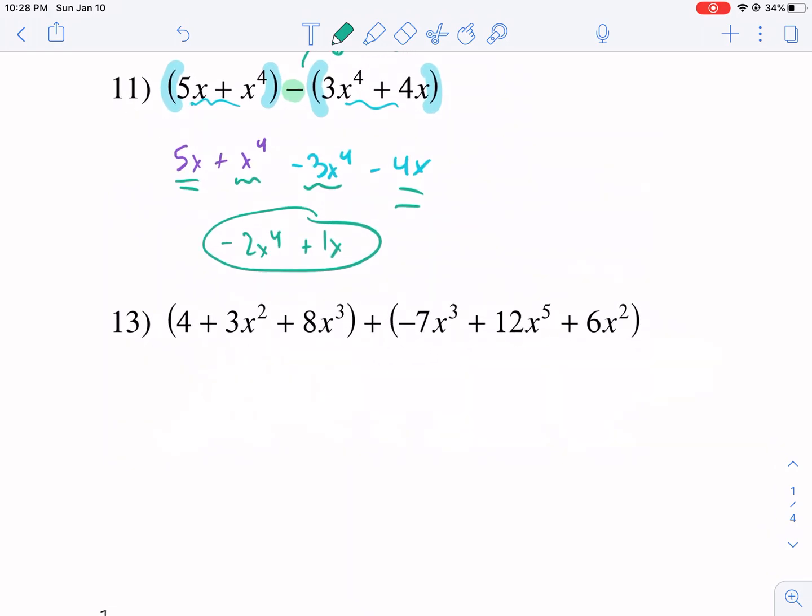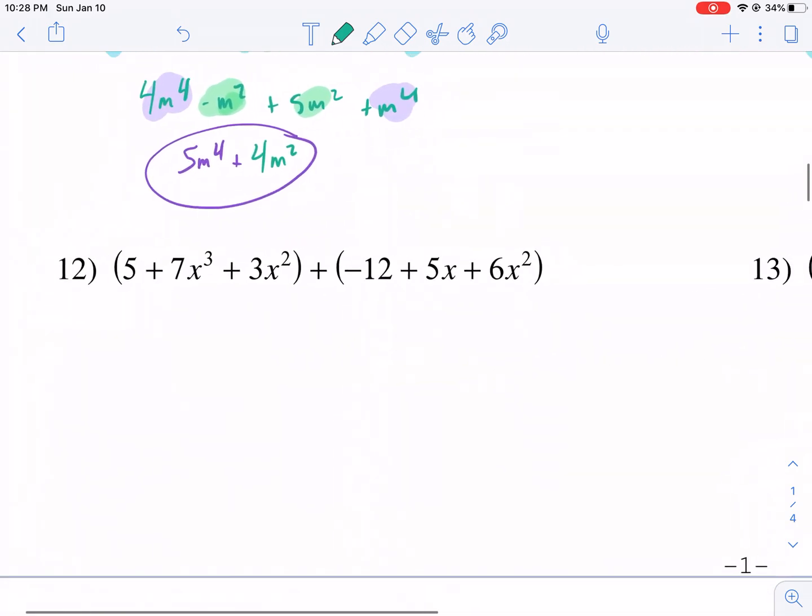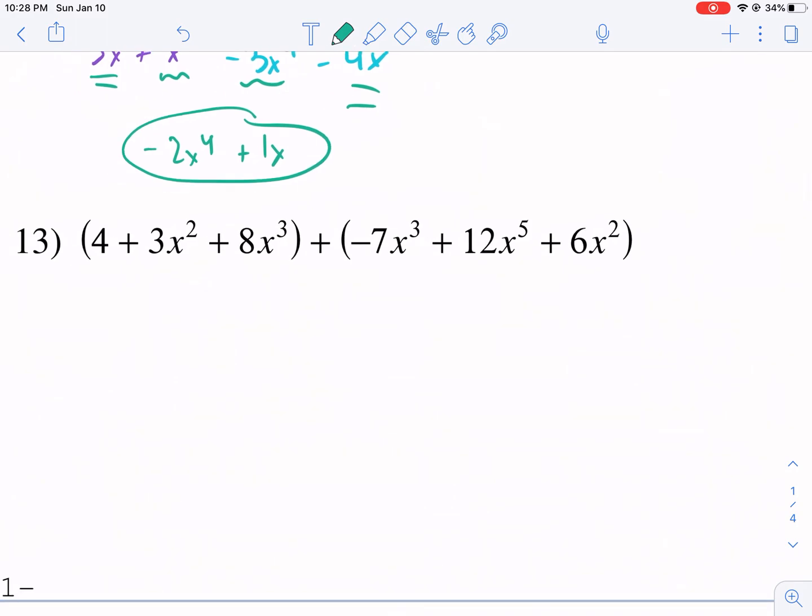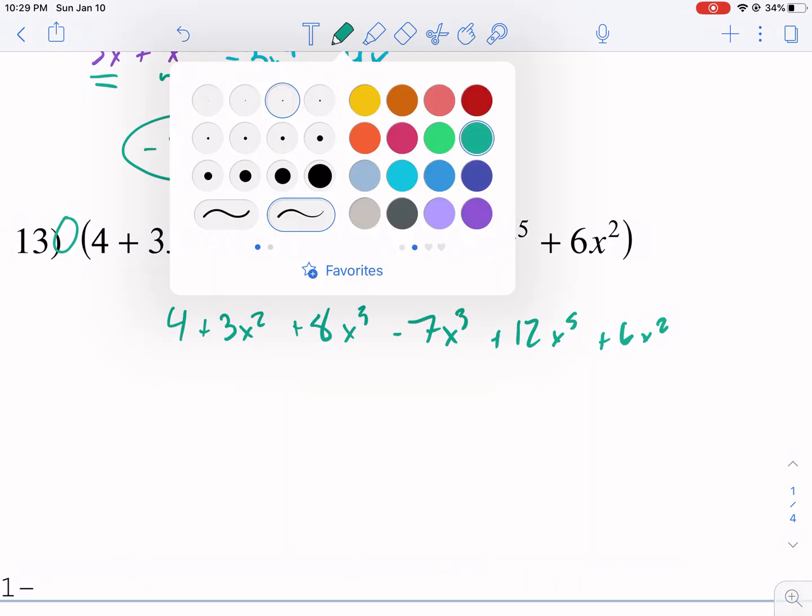There's nothing that can be combined inside the parentheses. We already distributed. So now we're good to go. We're going to look for like terms. So in this case, let me use the squiggly method. I like that one better. So we have this one and this one are the same squiggly. And this one and this one are the same.